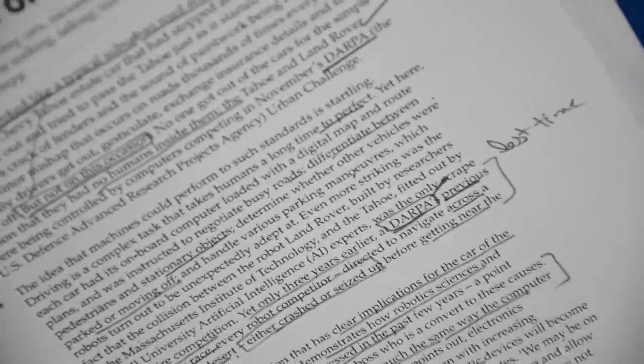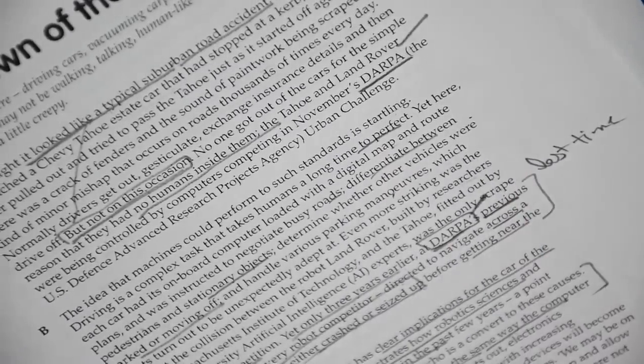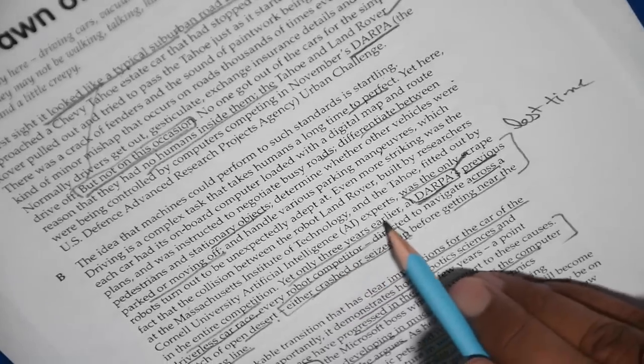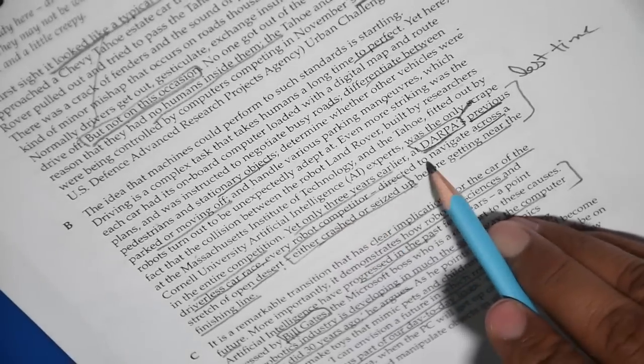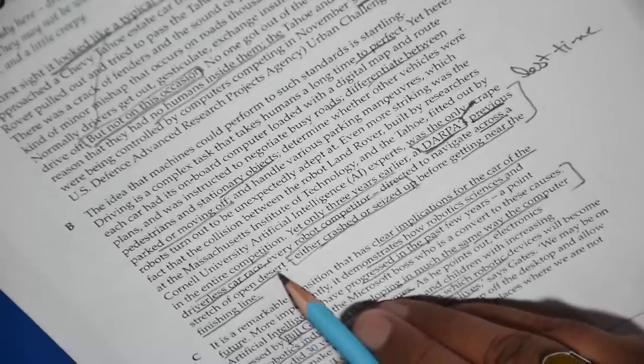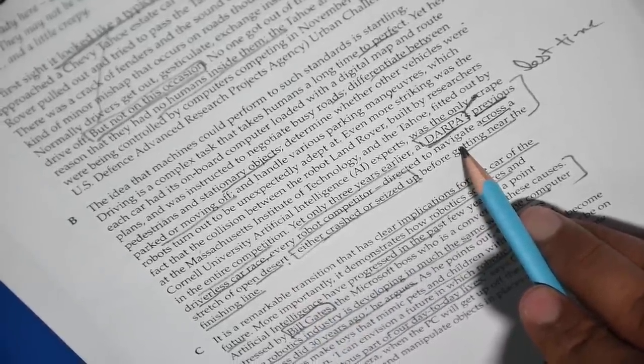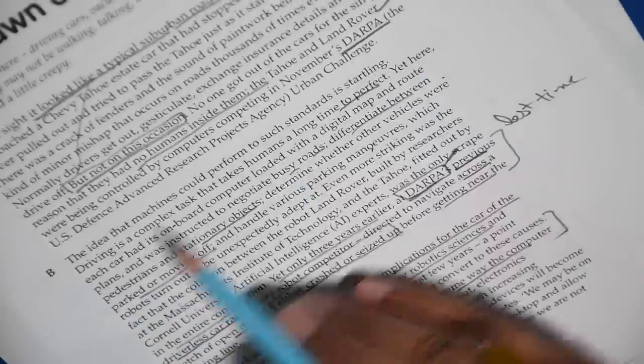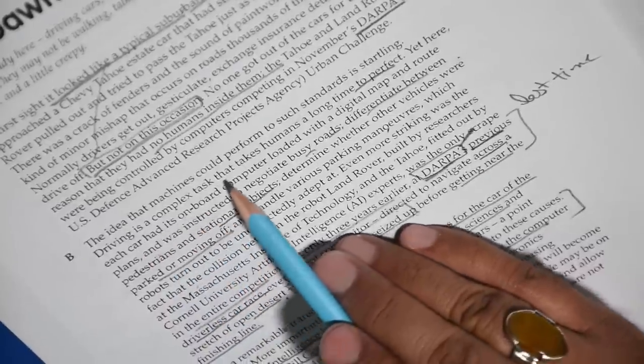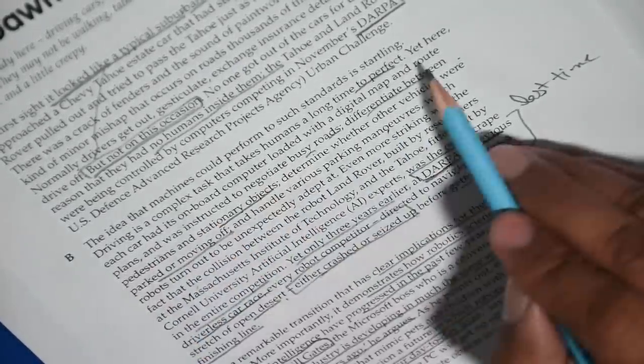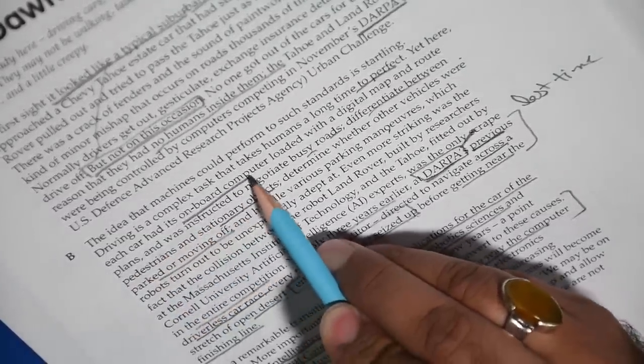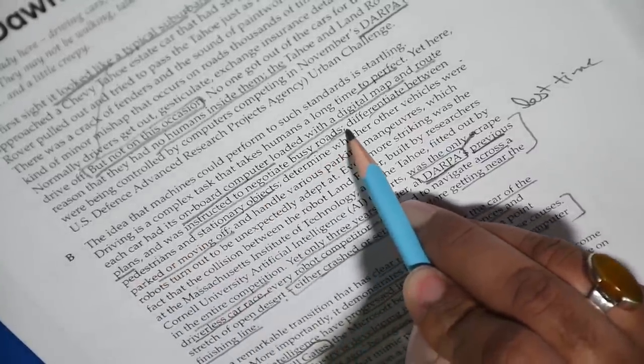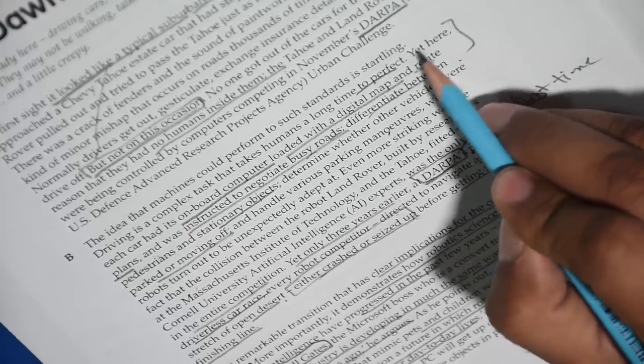Now there is something that provides maps and plans for route, so this is what we need to find. What is it that provides? Okay, here they are starting about Debra. Let's just go on. Okay, entire competition. Yet only three years earlier, Debra previous driverless car race, every robot competitor directed to navigate across a stretch of open desert to the finishing line. They talk about that. We need to see where do they provide answer. Okay, I can't see it there. The idea. Now this is all about Debra. The idea that machines could perform such a complex task that humans do.